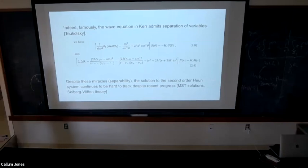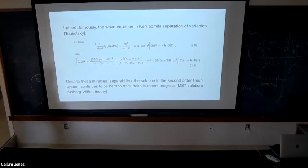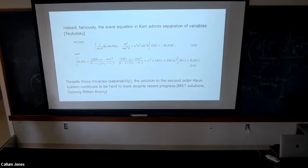Very recent progress has been made on expansions in terms of the spin parameter, in very nice work by MST — a Japanese group — and there's also recent progress trying to understand the confluent hypergeometric functions as coming from some partition function within a gauge theory framework. This is a particular expansion through the solution of the radial equation.